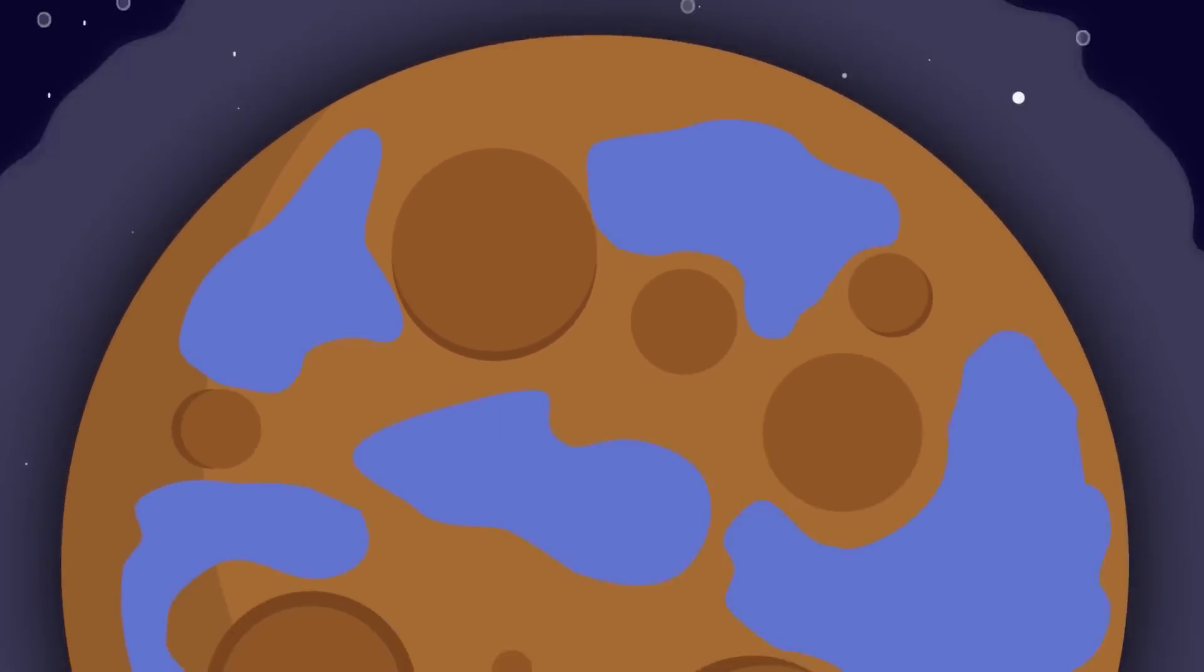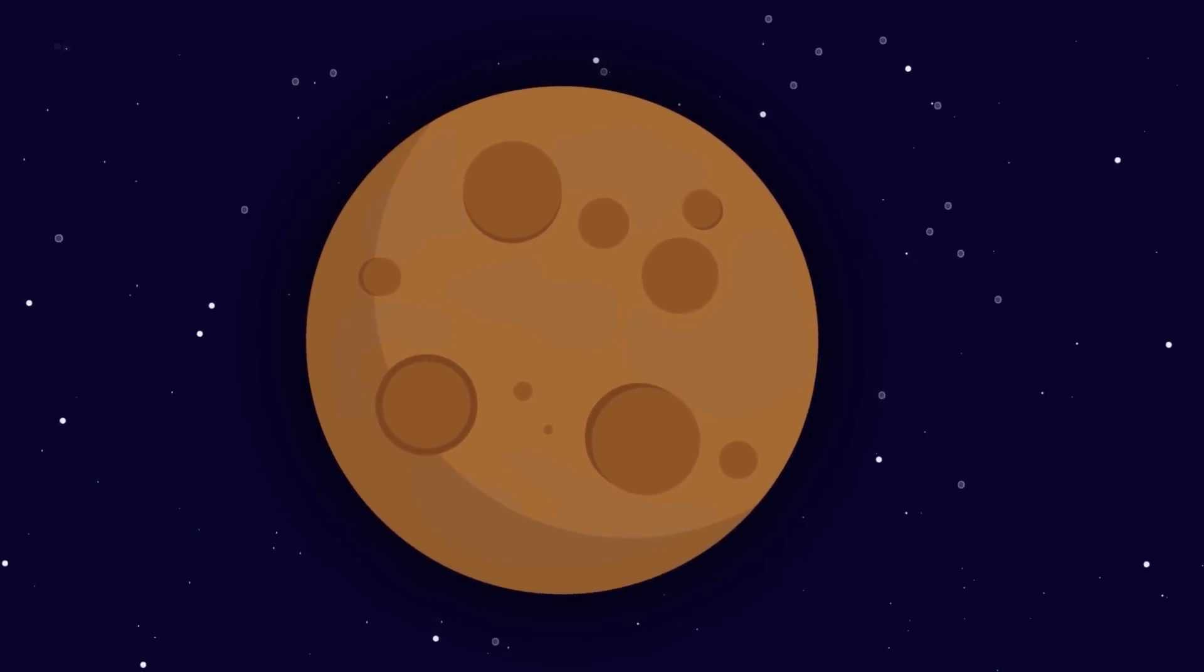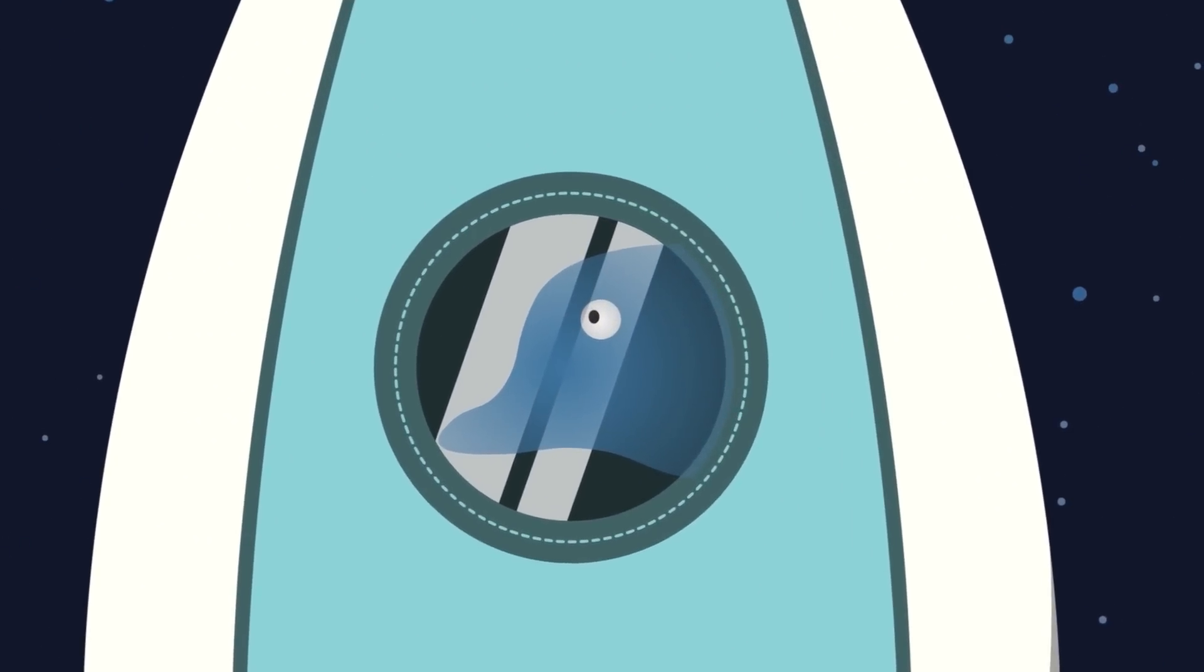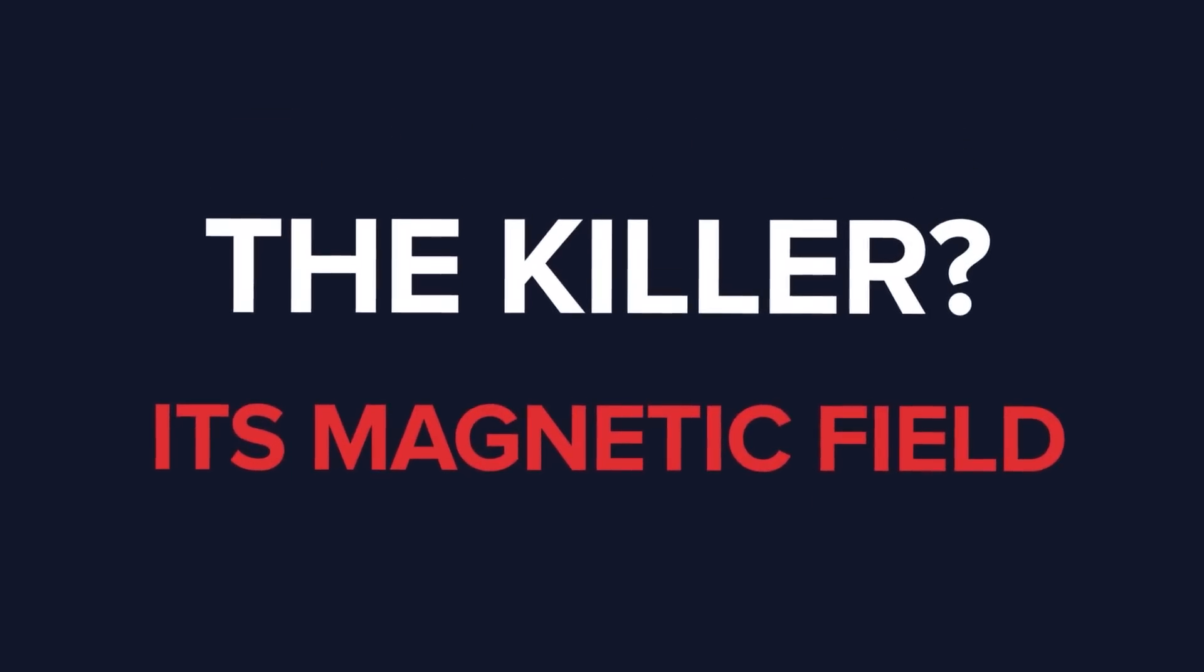Then, everything changed, in geological timescales practically overnight. The world that might have once held an advanced dolphin species capable of spaceflight – you can't prove that it didn't exist – is today only a dusty rock. The killer? Its magnetic field.